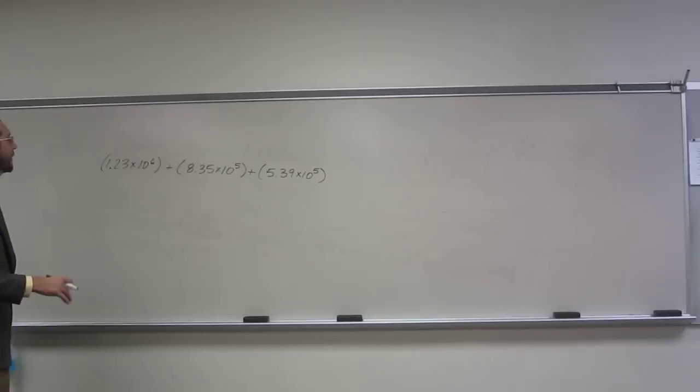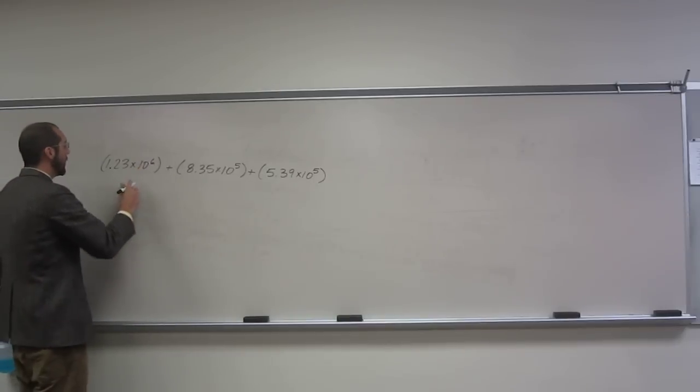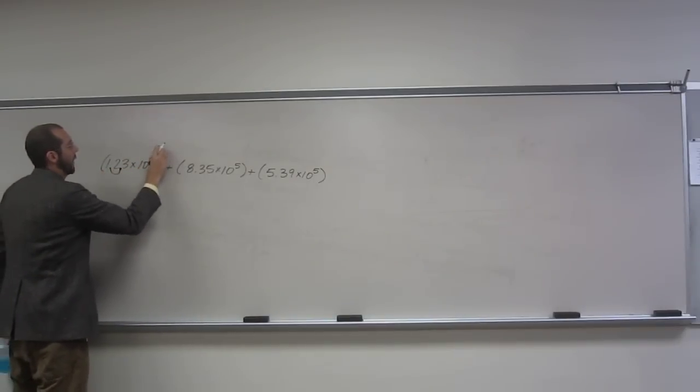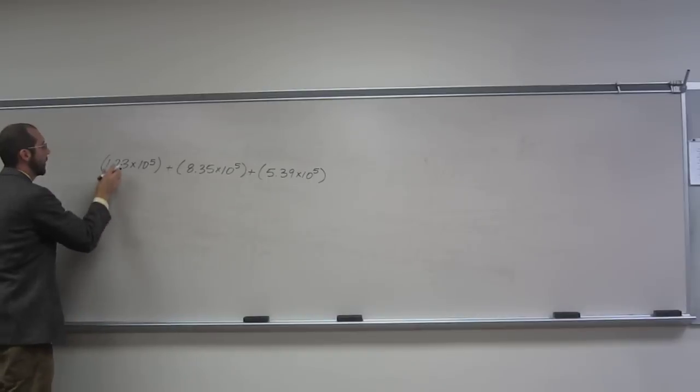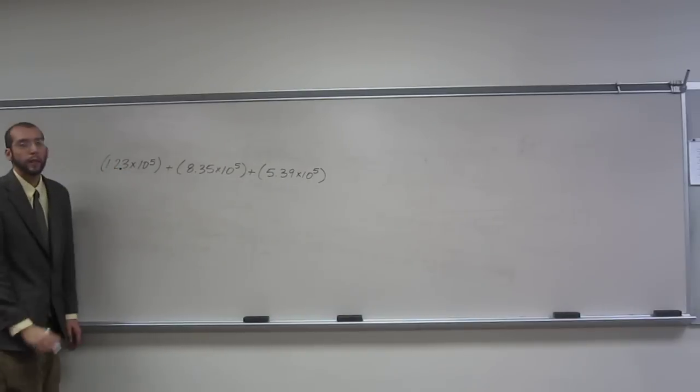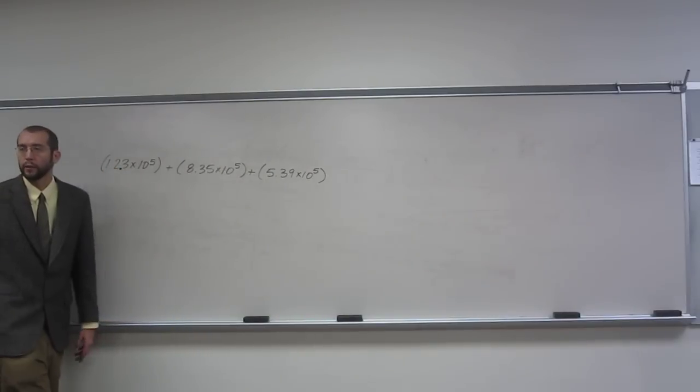So when you do that what you get is you're going to move your decimal point over to here and then that's going to be 10 to the 5th. So in other words you're going to have 12.3 times 10 to the 5th.